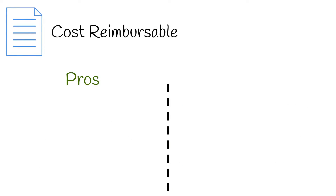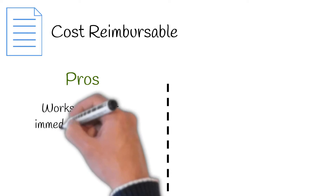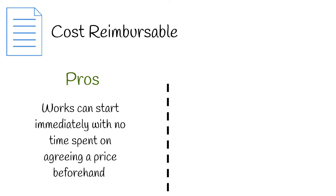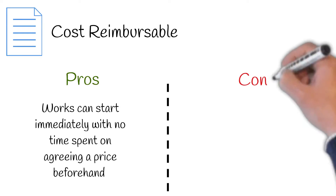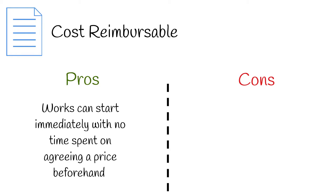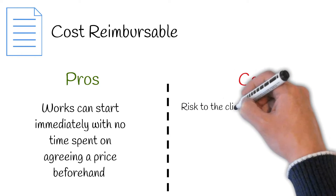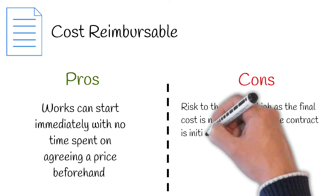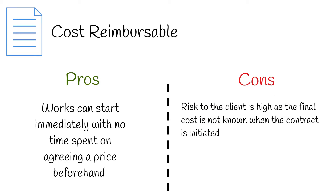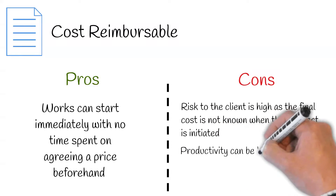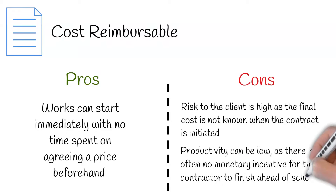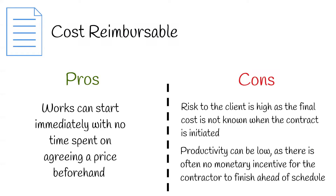Pros to this contract include: works can start immediately, with no time spent on agreeing a price beforehand. Cons to this contract include: risk to the client is high, as the final cost is not known when the contract is initiated. Productivity can be low, as there is often no monetary incentive for the contractor to finish ahead of schedule.